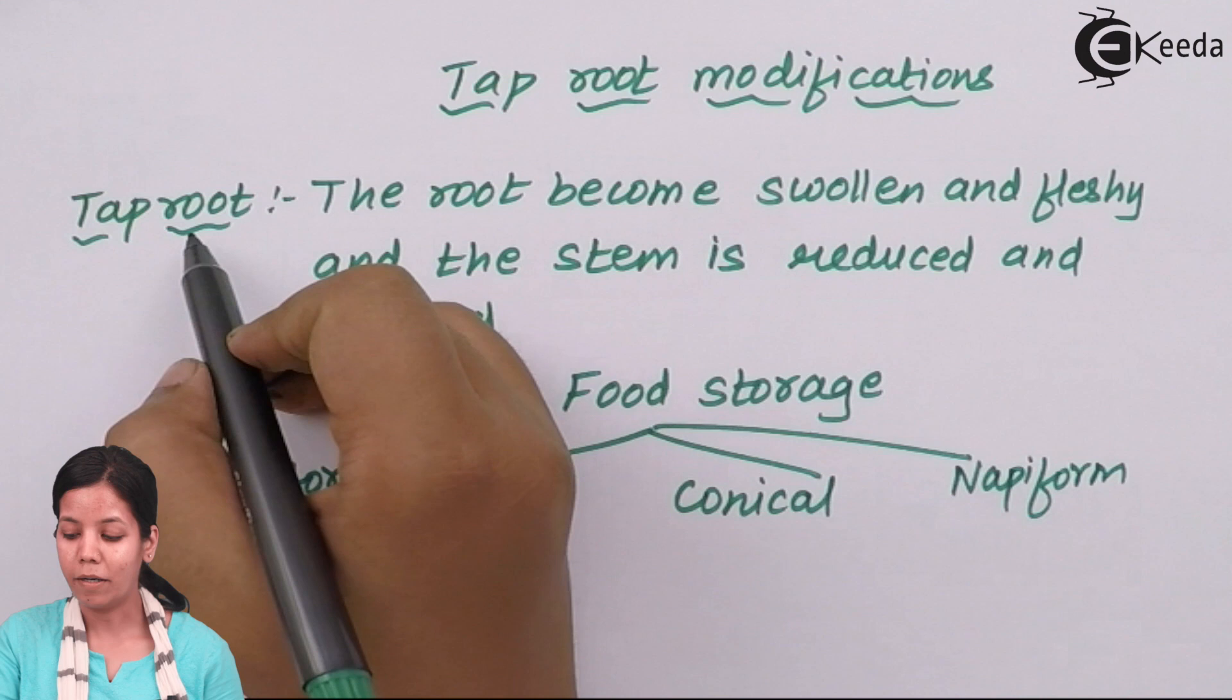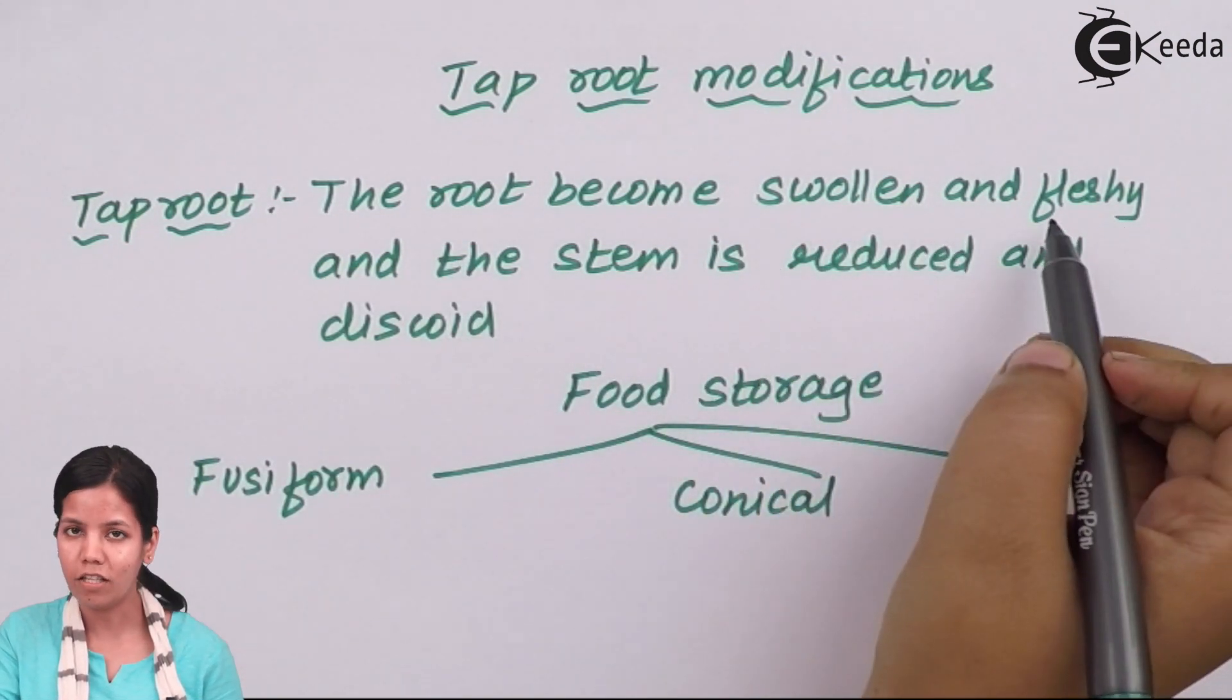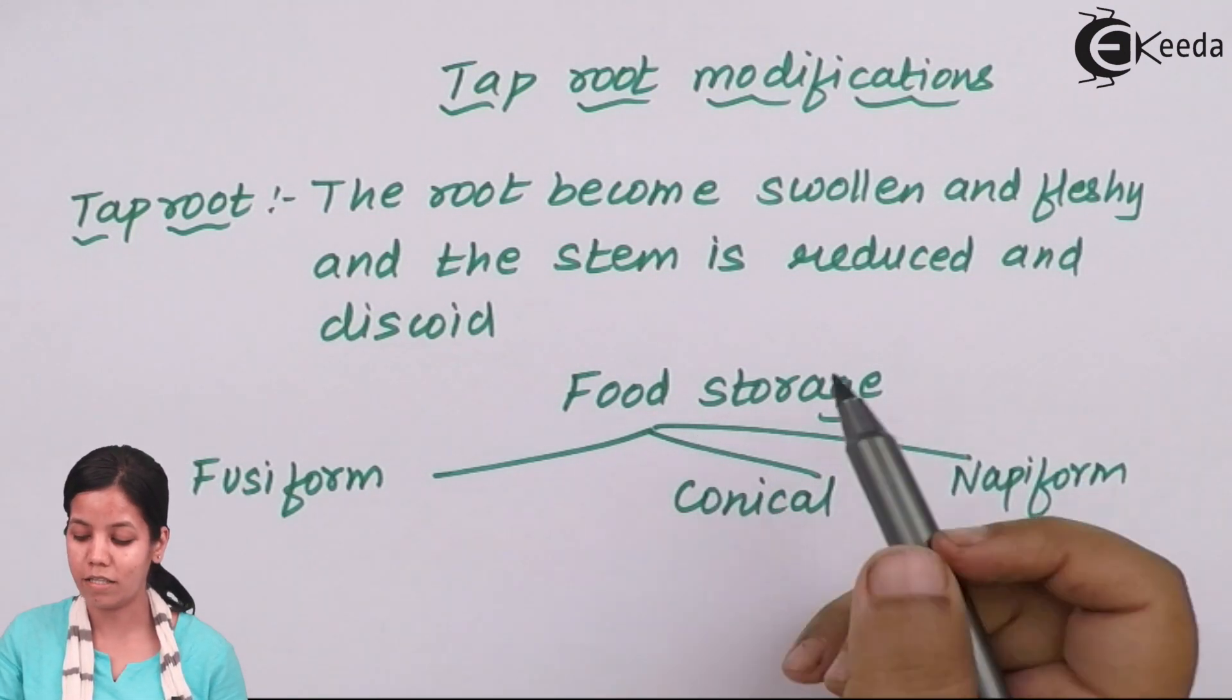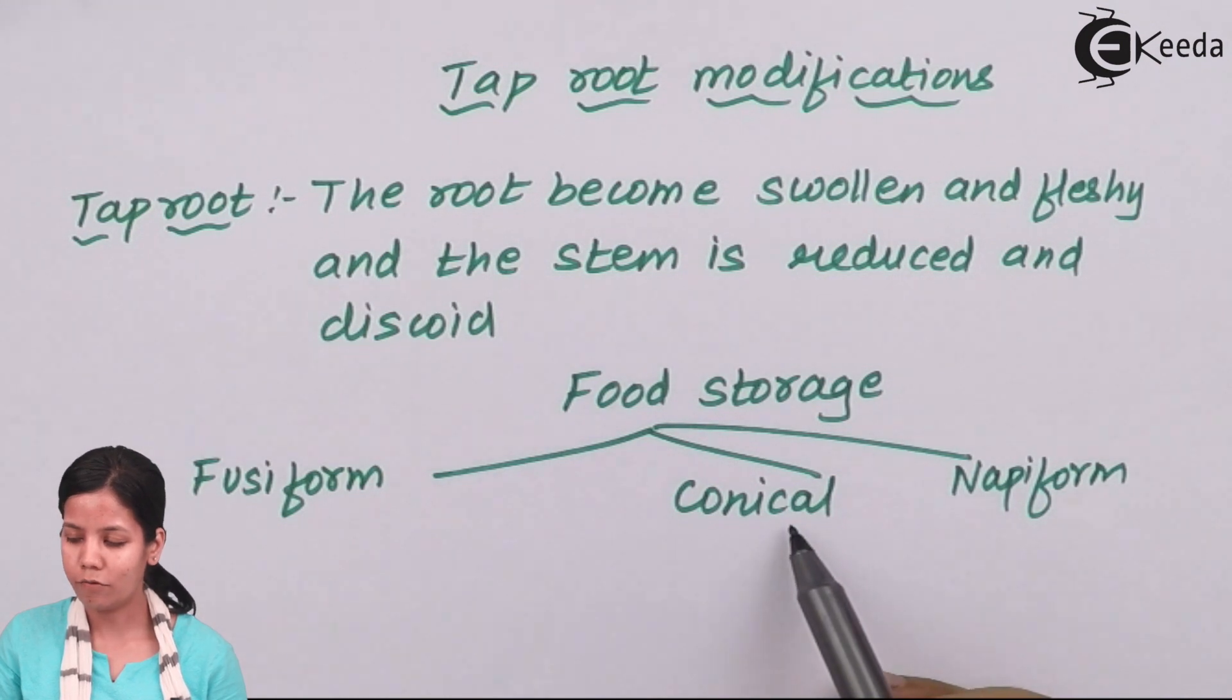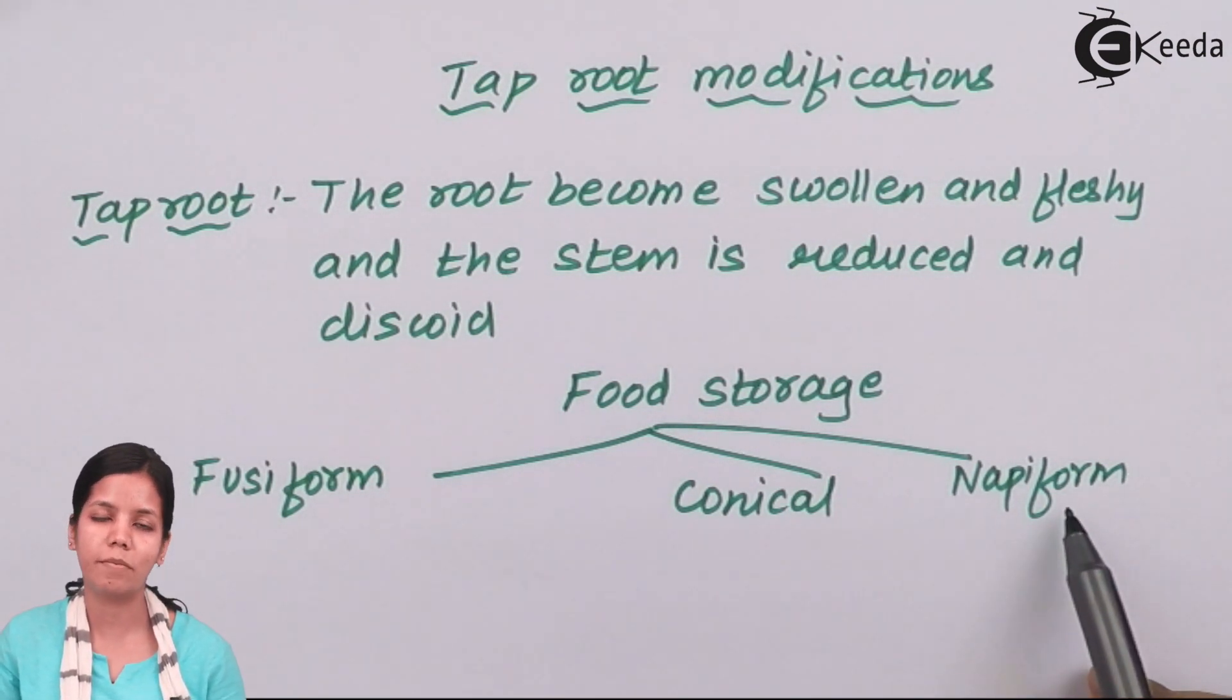Tap roots are modifications of roots to become swollen and fleshy just to store food. Tap roots have modified for food storage. Examples of this are fusiform, conical form, and nappy form, which are seen in carrot, beetroot, and radish respectively.